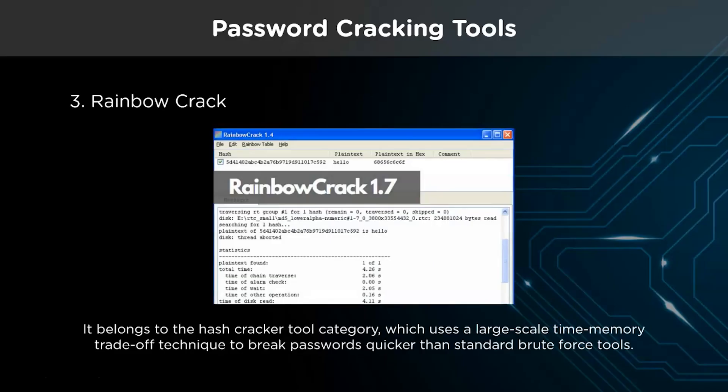RainbowCrack is a password-cracking application that uses a time-memory tradeoff algorithm to crack password hashes with rainbow tables. Rainbow tables make password cracking much easier and faster than traditional brute force attacks. It is like a dictionary containing nearly every possible password and the pre-calculated hashes. Creating this kind of dictionary takes much more time than cracking a single hash, but after that you can use the same dictionary over and over again. This procedure might take a long time; however, once the table is ready, it can break passwords far quicker than brute force methods.